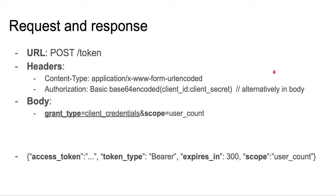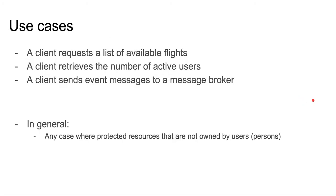It's pretty straightforward. Typical use cases are things like a client requesting a list of available flights — like a flight catalog of an airline — retrieving the number of active users if there's a dashboard to show active users in the system, or a client sending a message to a message broker. All of these cases are ones where the protected resource is not owned by a user. Generally, any protected resources that are not owned by users, where a user does not need to provide permission.